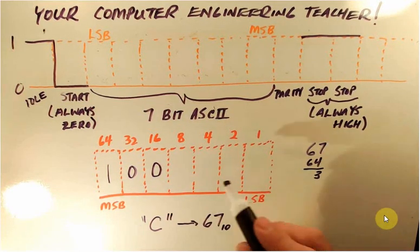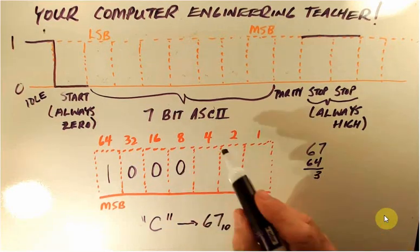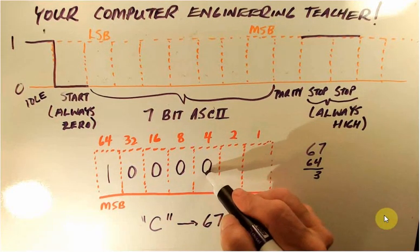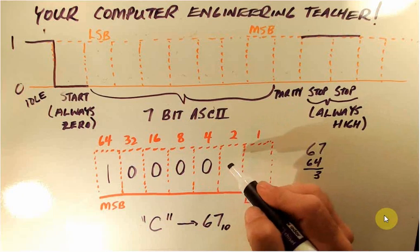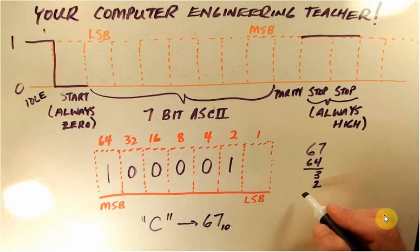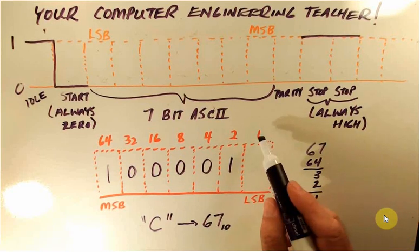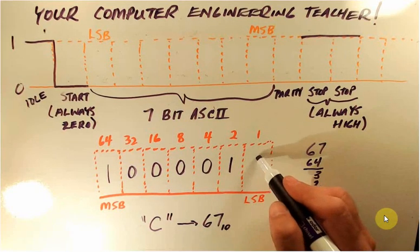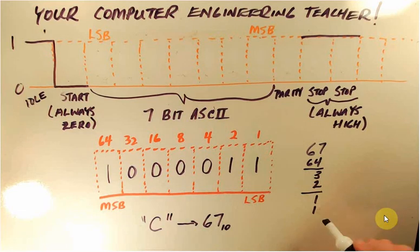But 2 does. So 2 goes in, so we'll put a 1 here and then we subtract. So subtract and we get 1. And then we say, well, does 1 fit into 1? Yes it does. Goes in, and when we subtract there is 0 remainder.